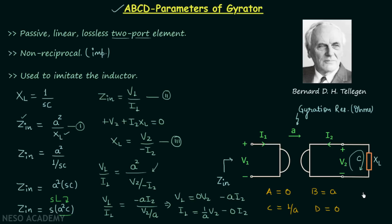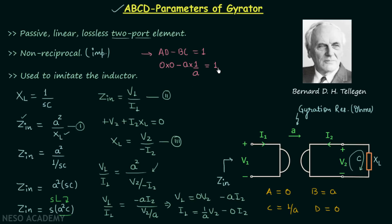So the ABCD parameters of the gyrator are A = 0, B = A, C = 1/A, D = 0. When we reverse the direction, V1 = +A·I2 and I1 = −V2/A. To check reciprocity, the condition is AD − BC = 1. Here AD = 0, and BC = A·(1/A) = 1, so AD − BC = −1. Since −1 ≠ 1, this confirms that the gyrator is non-reciprocal.